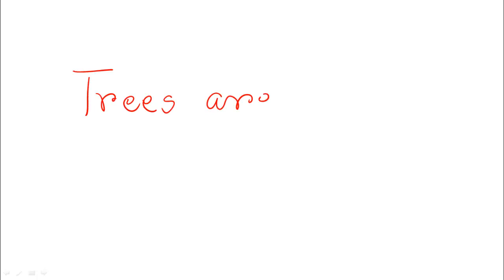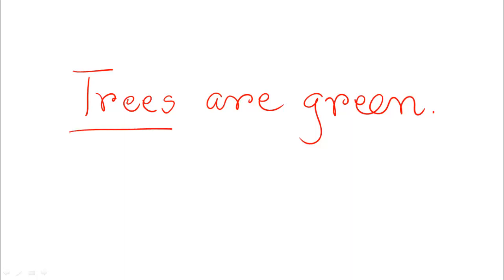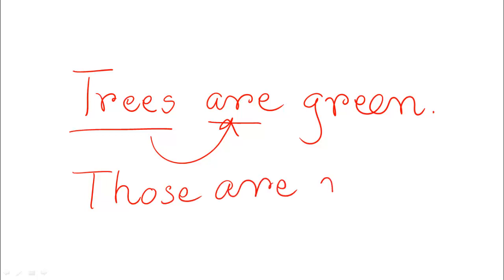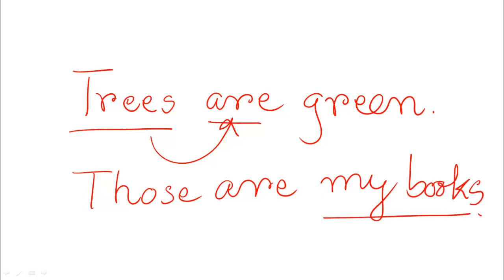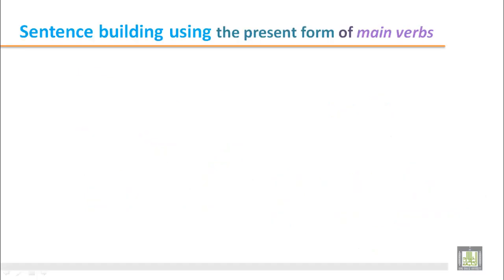They are engineers in a company — 'they' is a plural pronoun and it requires the BE verb 'are.' We also use BE verbs with different objects and names. For example: Trees are green. 'Tree' is a singular noun but 'trees' is a plural noun, so for 'trees' we use the BE verb 'are.' Another example: Those are my books. 'My books' is a plural noun and so it is followed by 'are.'